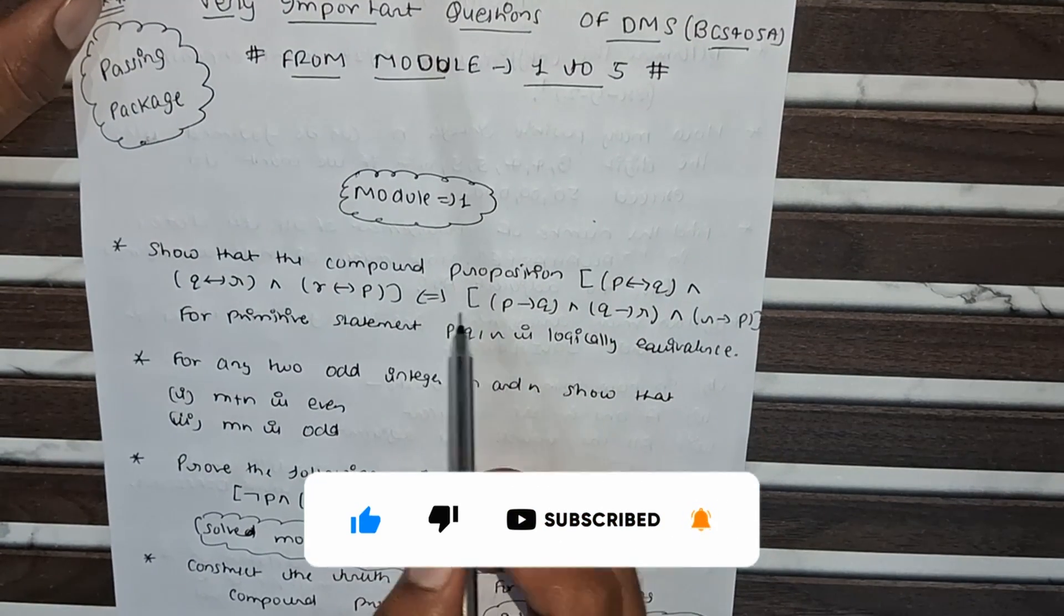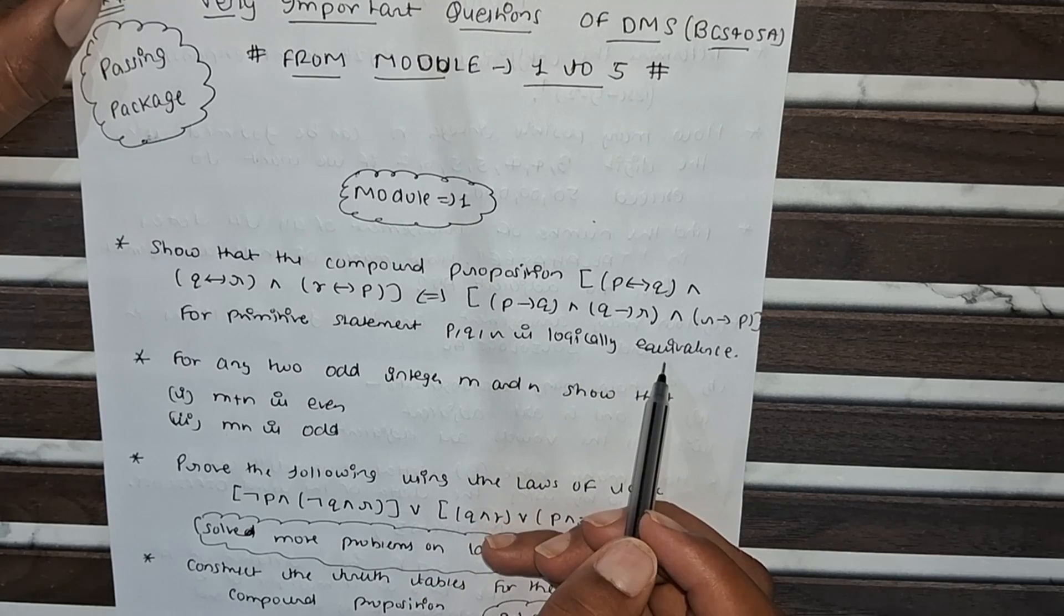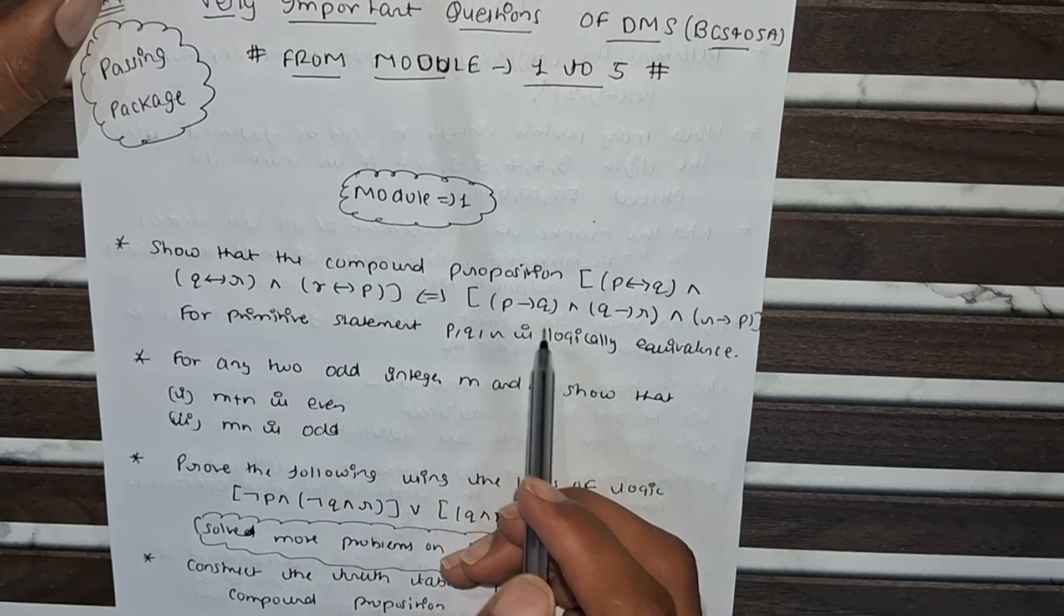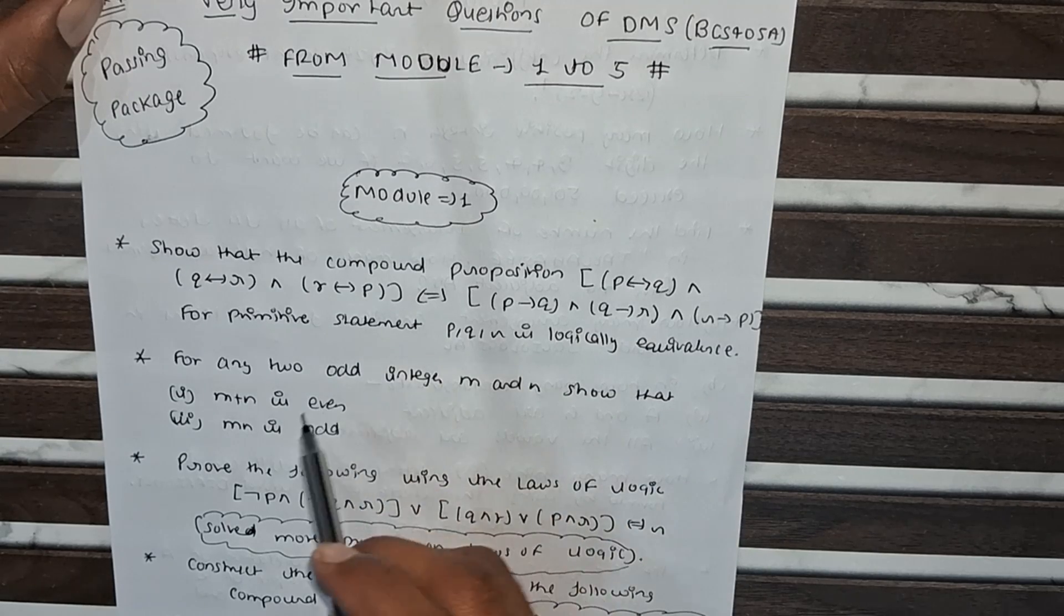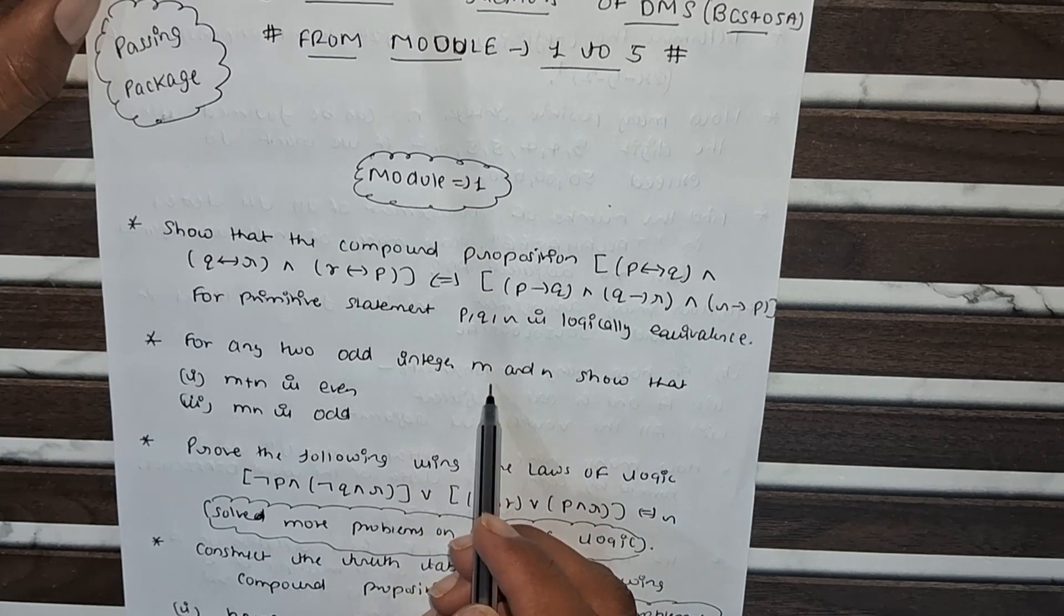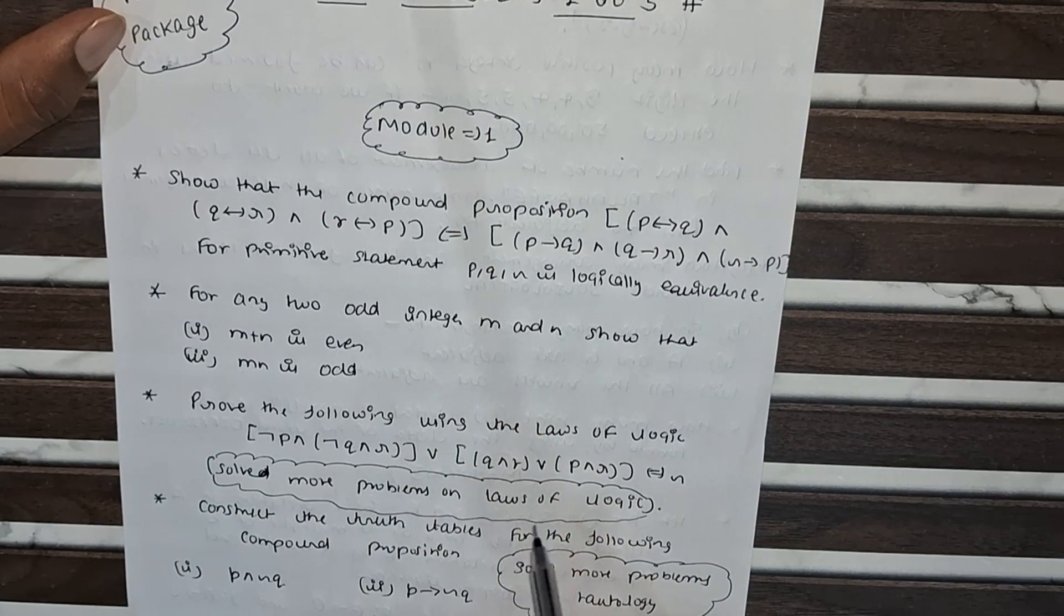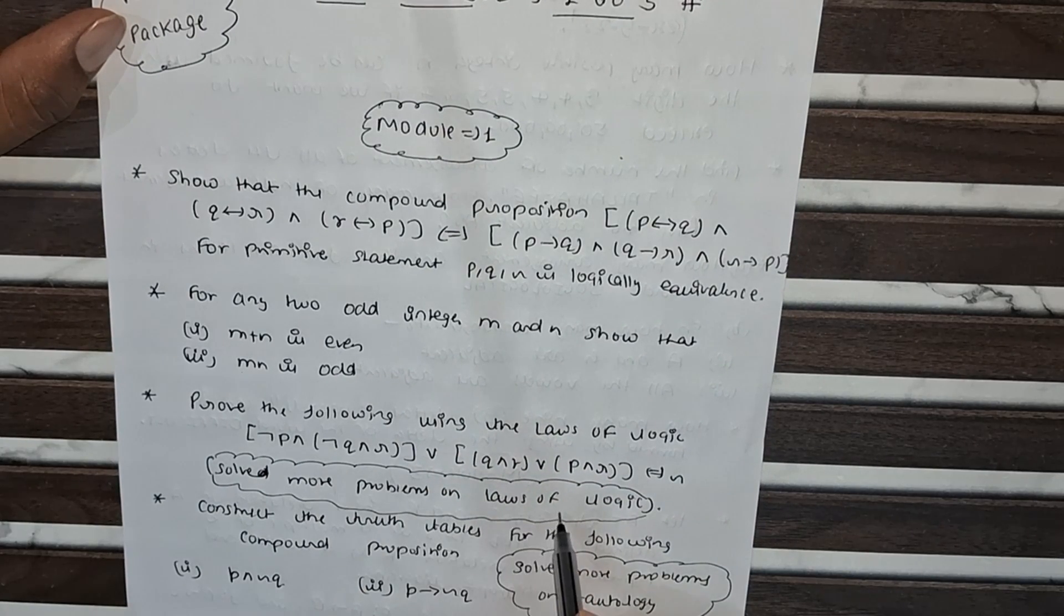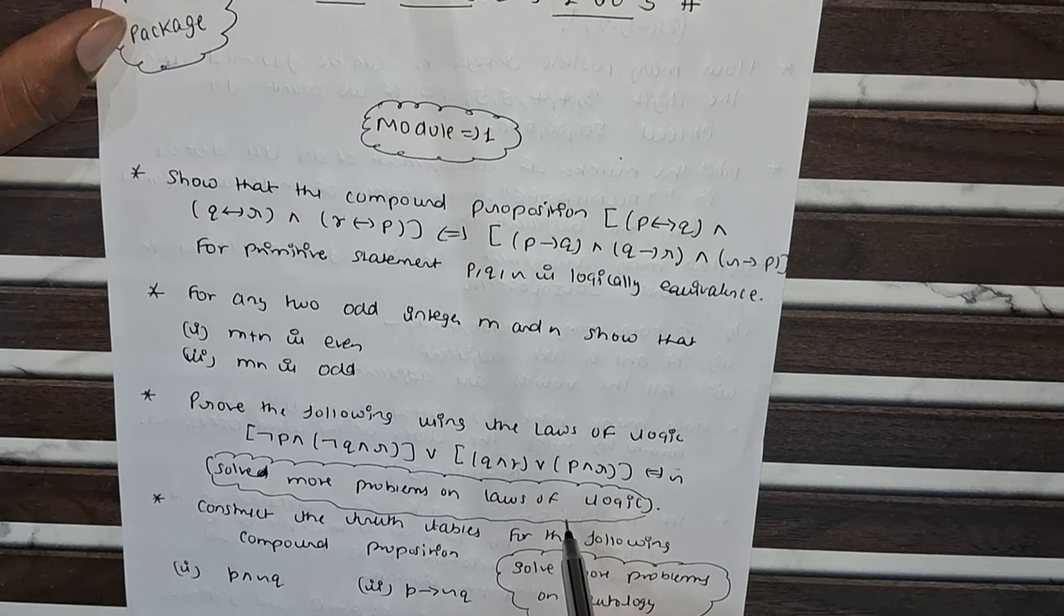From module 1, we are solving problems on logical equivalence. Compound propositions like these are most important for primitive statements. Second, odd and even integers M and N - you have to prove this is important. And third, again on laws of logic. You have to solve more problems on laws of logic.